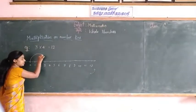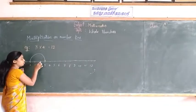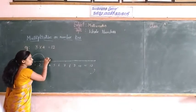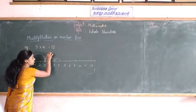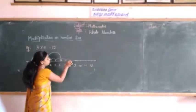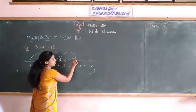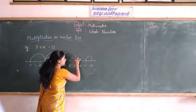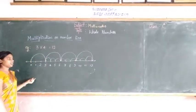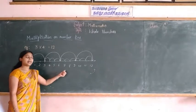So, 3 units at a time to the right: 3 units — 1, 2, 3; again 1, 2, 3; again 1, 2, 3; again 1, 2, 3. That makes 4 moves of 3 units each. This is the representation of multiplication on the number line.